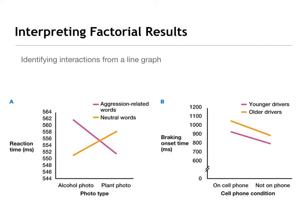Here's another example. Both of these are going to have an interaction. Independent variable one is aggression-related words versus neutral words, and independent variable two is photo type. Clearly we've got an interaction because the lines are crisscrossed. We need to describe all four data points — alcohol photo with aggressive-related words, alcohol photo with neutral words, and then what's completely opposite for the plant photo, where we see higher reaction times for neutral words than for the aggressive-related words.